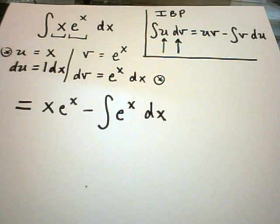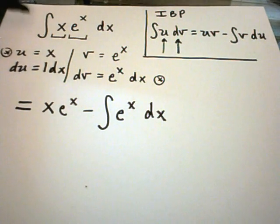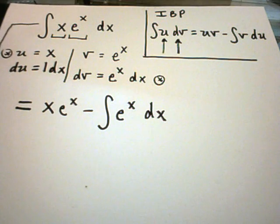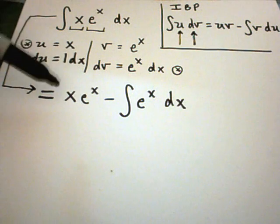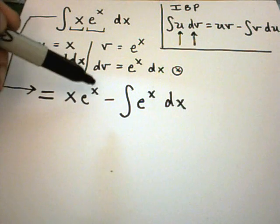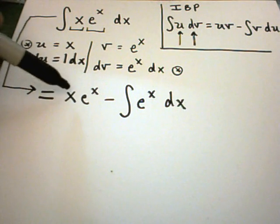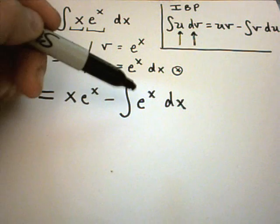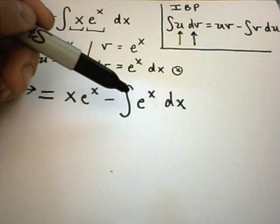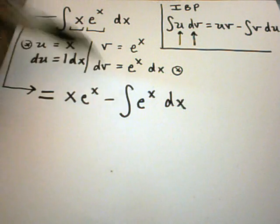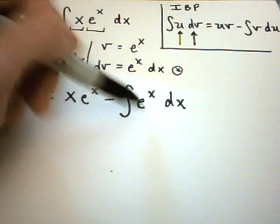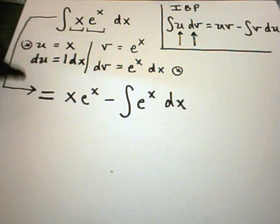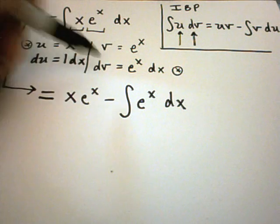The idea in general is you've basically turned one integration problem into a new integration problem. Notice, part of the problem has no integral in it at all, so you're done with that part. Hopefully, the new thing you still have to integrate has gotten better than what you originally started with. If you're getting something more complicated, chances are you picked the wrong u and dv.